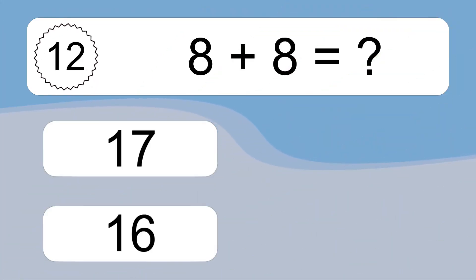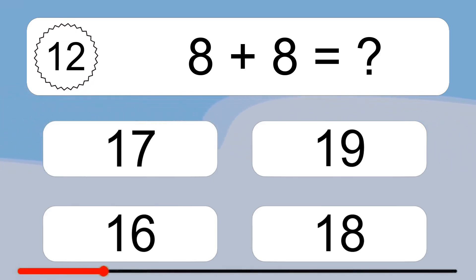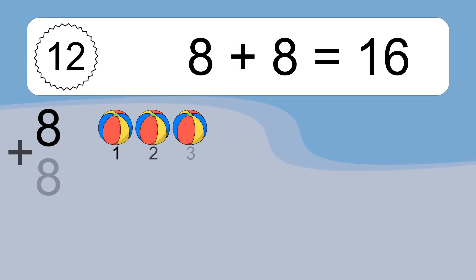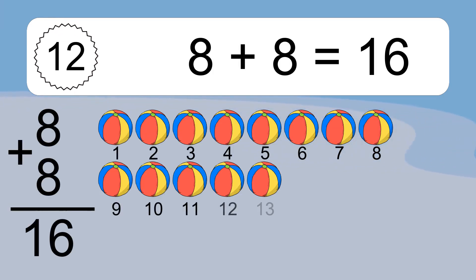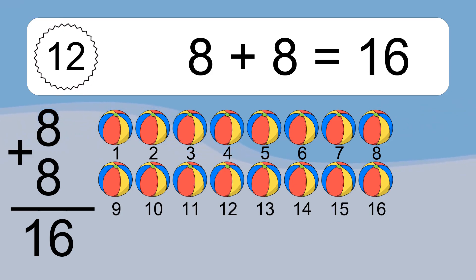8 plus 8 equals what? 8 plus 8 equals 16. Let's count it: 1, 2, 3, 4, 5, 6, 7, 8, 9, 10, 11, 12, 13, 14, 15, 16.